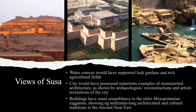Here are some more views of Susa. As you can see, there are water sources very close to the city, including springs, which would have allowed the residents to support lush gardens and rich agricultural fields. The city would have possessed numerous examples of monumental architecture, as shown by archaeologists' reconstructions and artists' recreations. The buildings have some resemblance to the older Mesopotamian ziggurats, shown here with their levels, which shows the long cultural and architectural traditions of the ancient Near East.